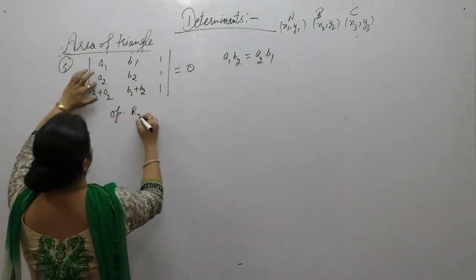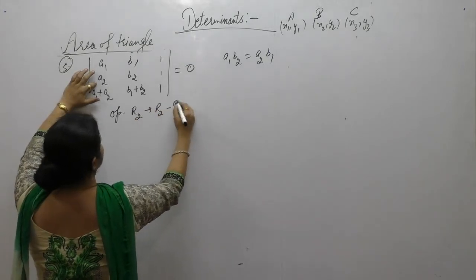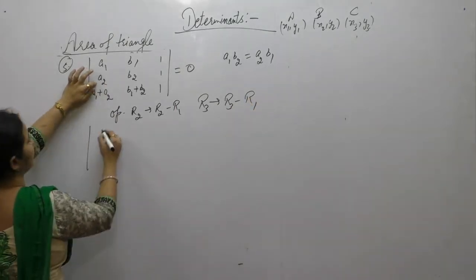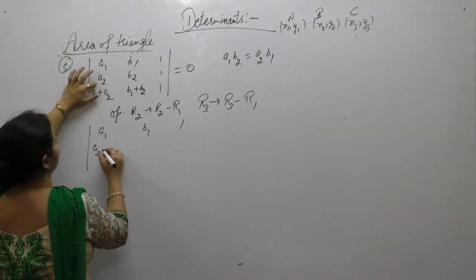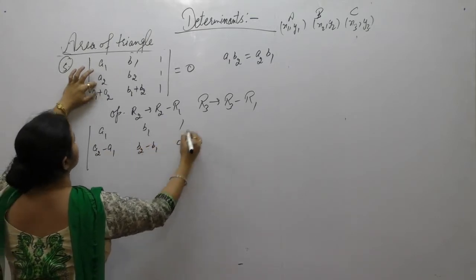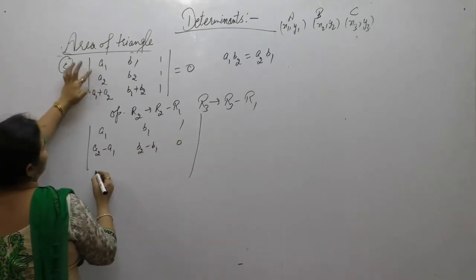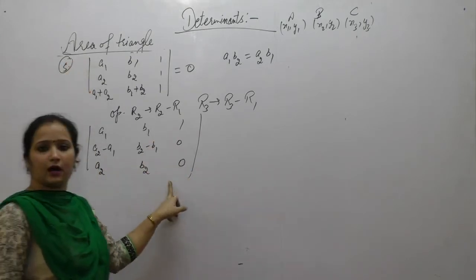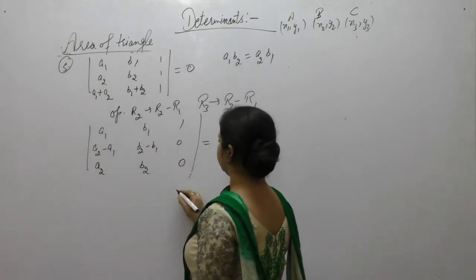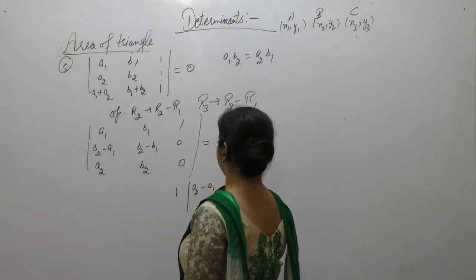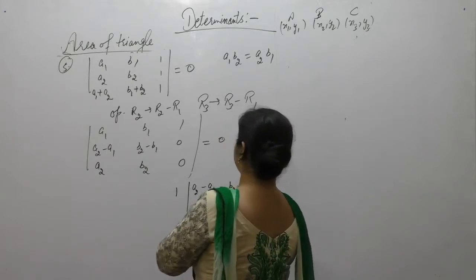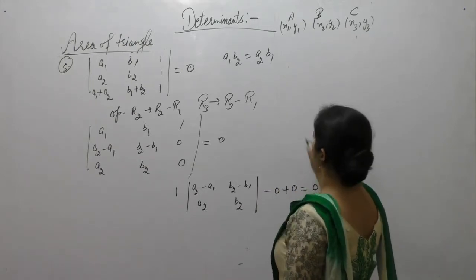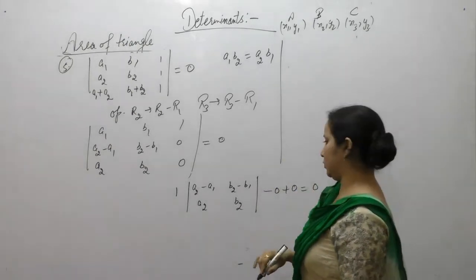After row operations, expand it along the third column. We get 1 into (a2-a1)(b2-b1) - (b2-b1)(a2-a1) type expression. Specifically, 1 into [(a2-a1)(b2-b1) - (b2-b1)(a2-a1)] expanded gives a2·b2 - a1·b2 - a2·b1 + a1·b1 terms. This equals 0 because the points are collinear.